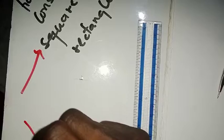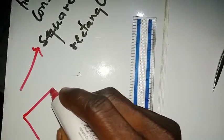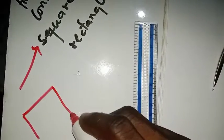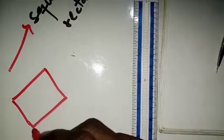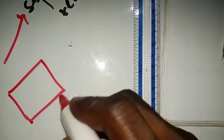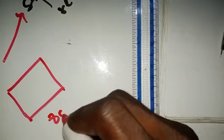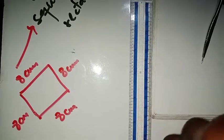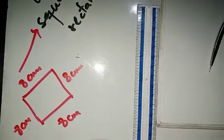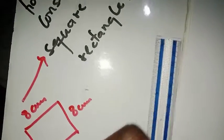Talking about a square, we know that a square must have all four sides equal. So what that means is if the distance from one point is eight centimeters, then all the other three sides must also be eight centimeters. Those are the key properties you must understand before you start constructing a square.